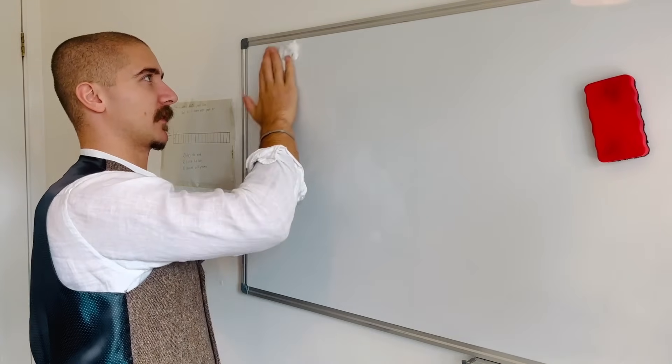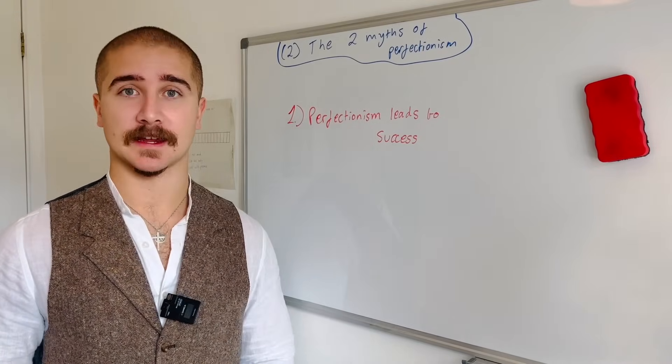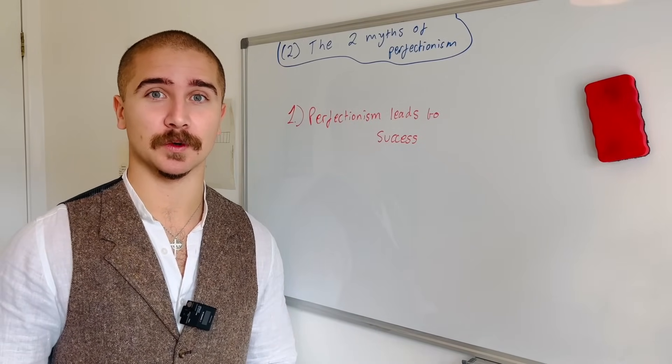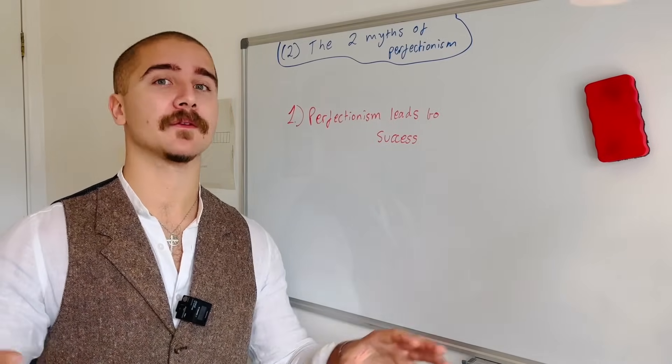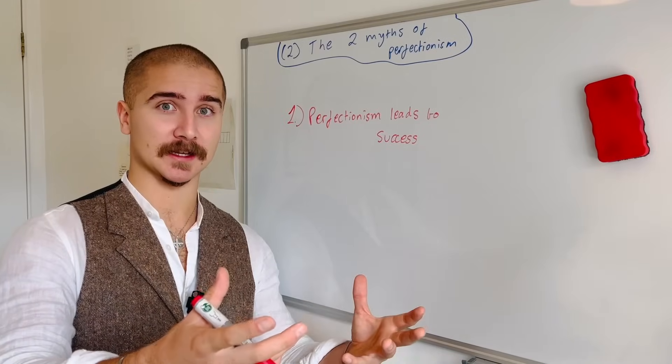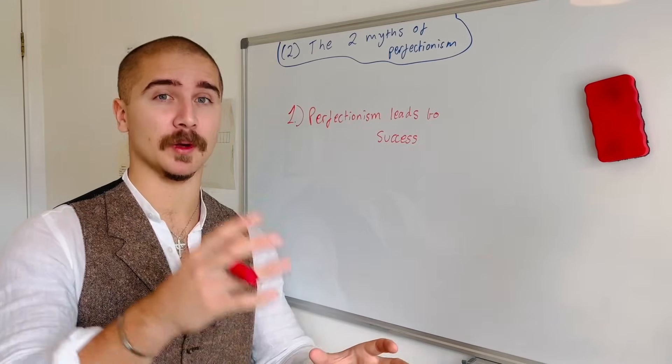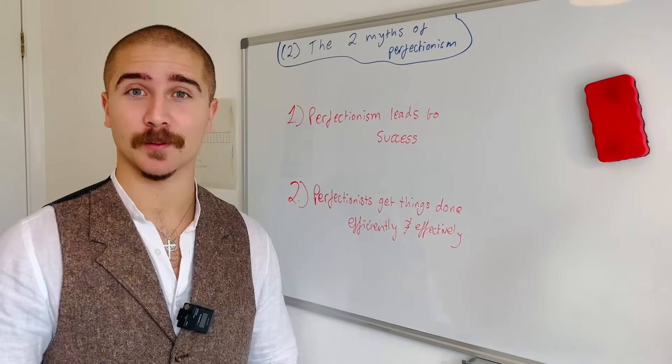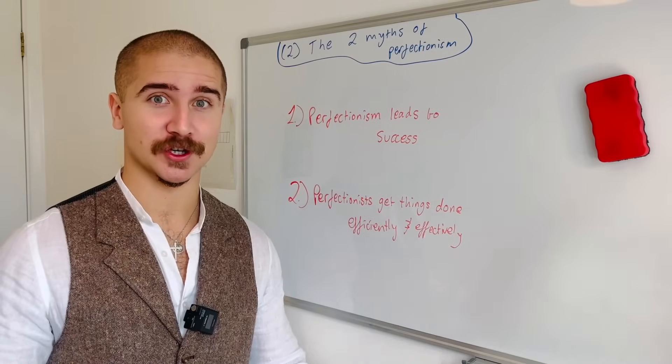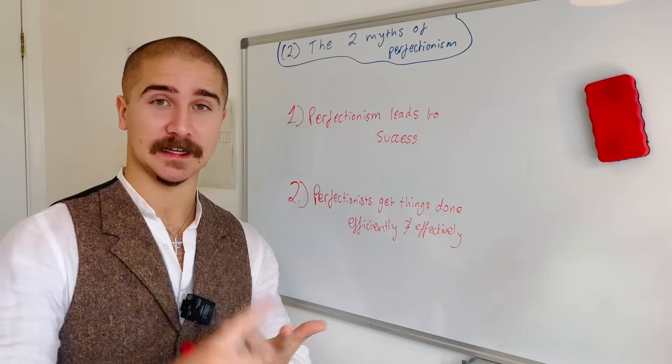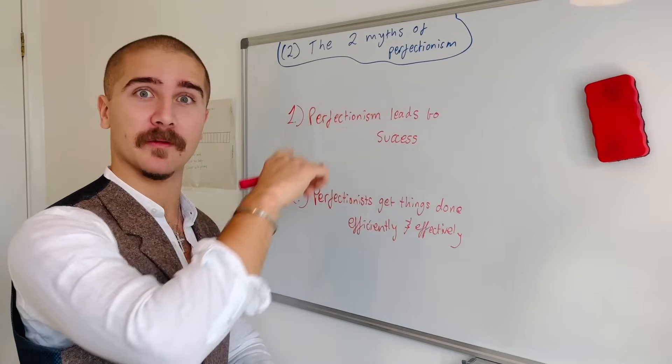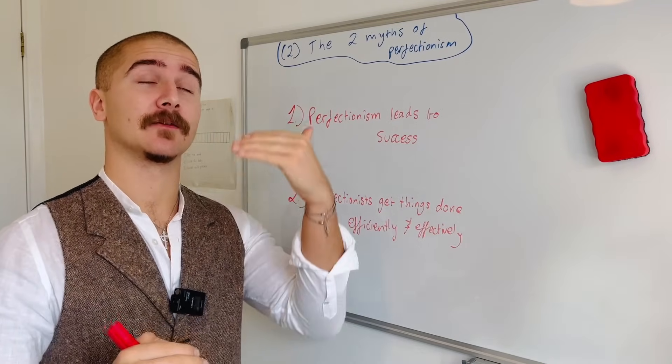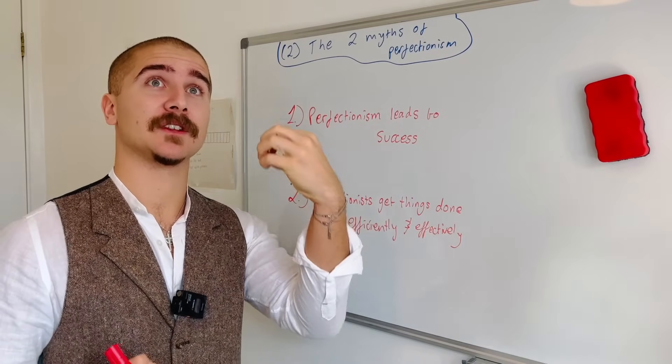Now moving on to the two myths about perfectionism. Number one is perfectionism leads to success. Absolutely not, in most cases. There's a study which showed that when you have a group of people who all have the same level of talent and intellect in a given subject, perfectionists in that group perform less well. And the second myth is perfectionists get things done efficiently and effectively. Again, complete BS. Perfectionists deal with low productivity and procrastination. Going back to the wheel of perfectionism, you set your standards so high so you procrastinate to give yourself relief.